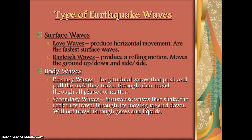Therefore, S waves will not travel through the outer core. They can travel through the asthenosphere, however, because remember, the asthenosphere is slightly plastic — so it's like a solid and a liquid, but not completely one or the other. So S waves can travel through the asthenosphere.